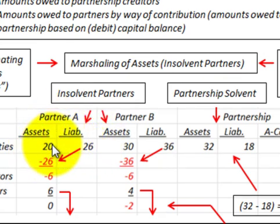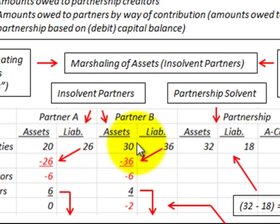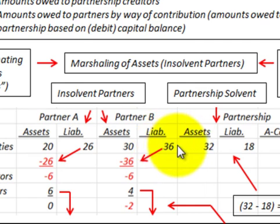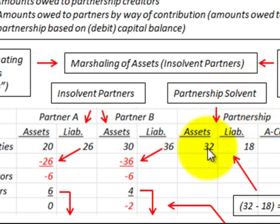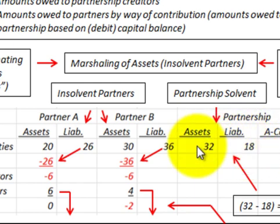For Partner A, assets of $20,000 and liabilities of $26,000. For Partner B, assets of $30,000 and liabilities of $36,000 — their liabilities are greater than their assets. For the partnership, which is solvent, it has assets of $32,000 and liabilities of $18,000, so its assets are greater than its liabilities.